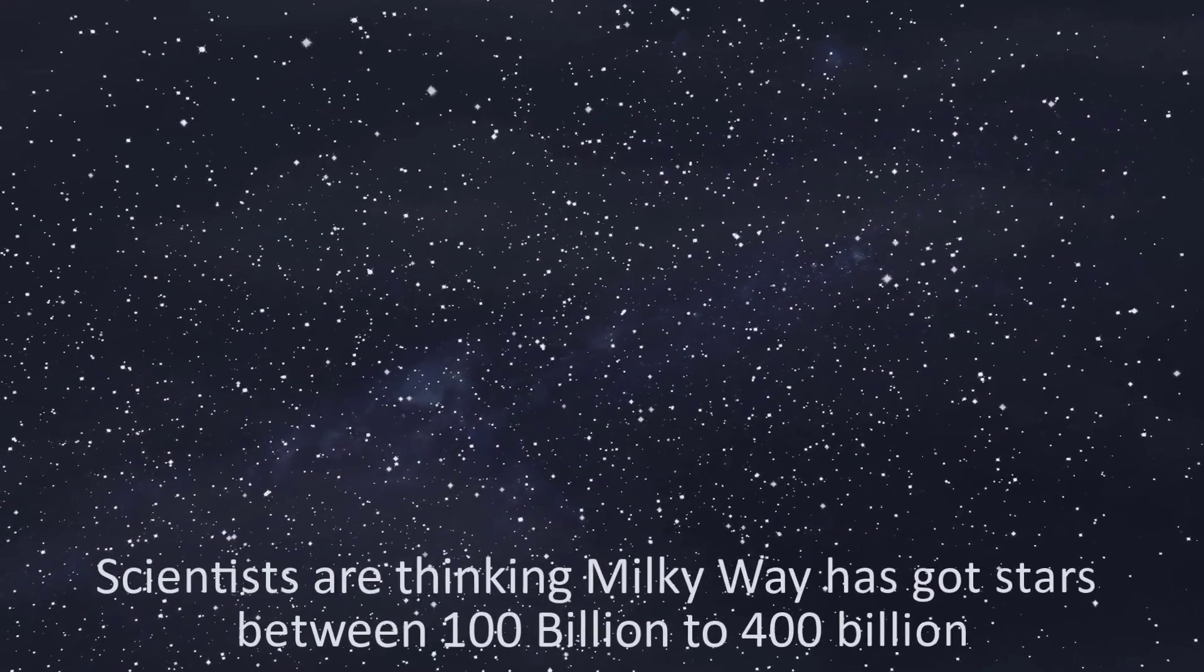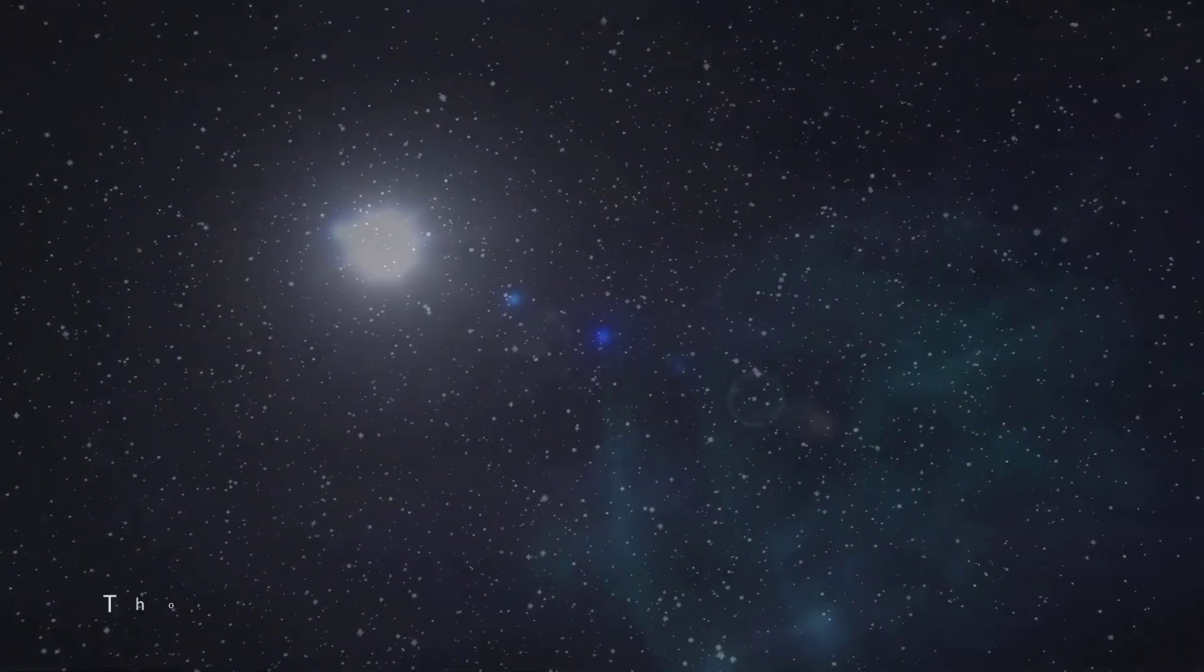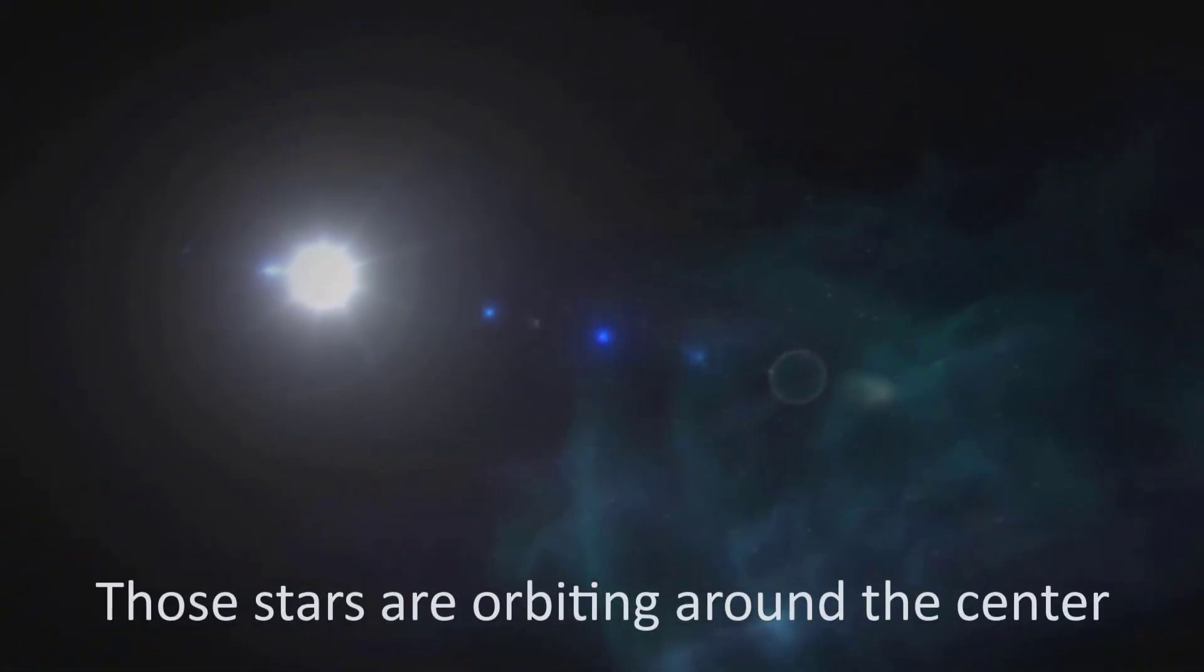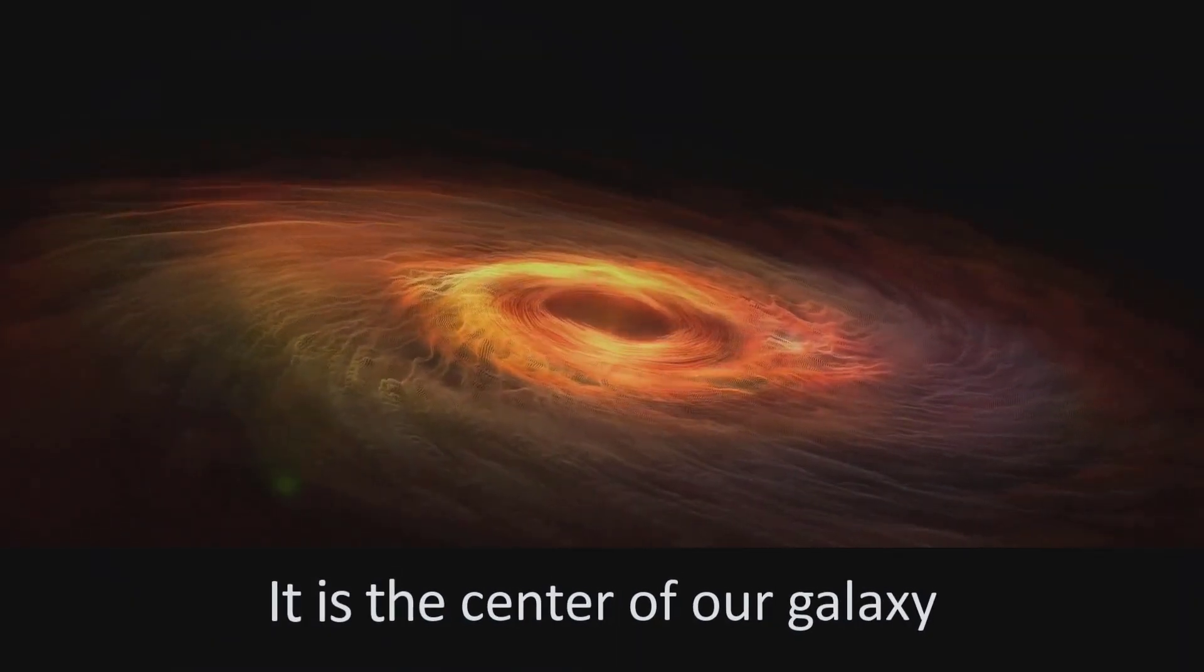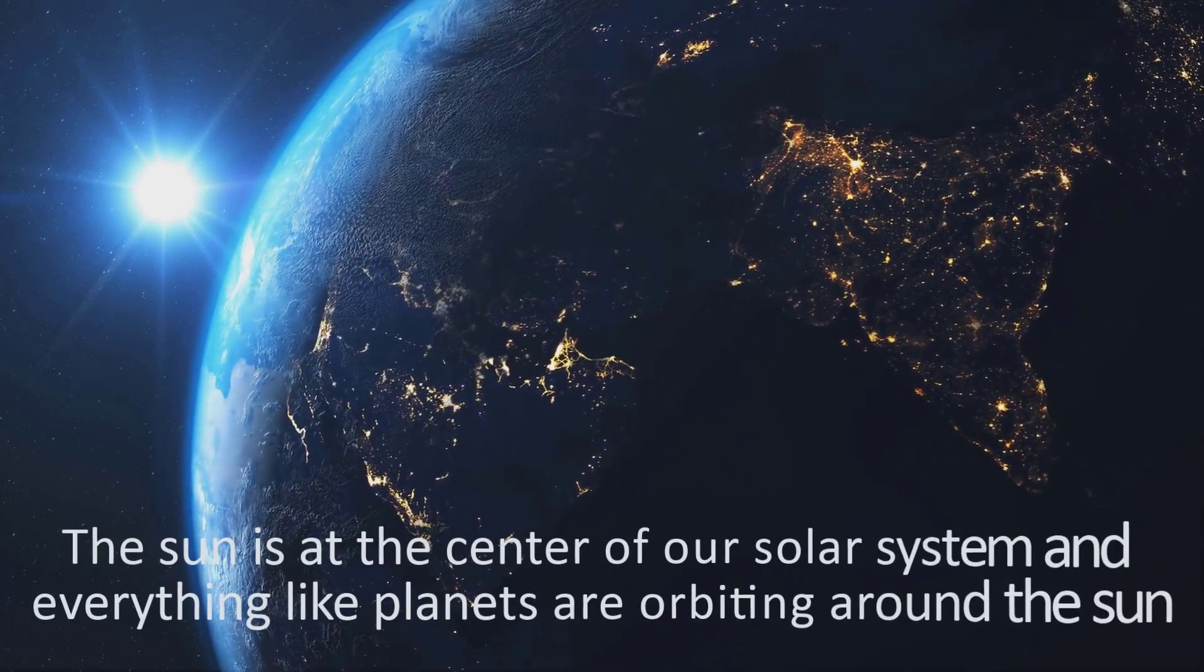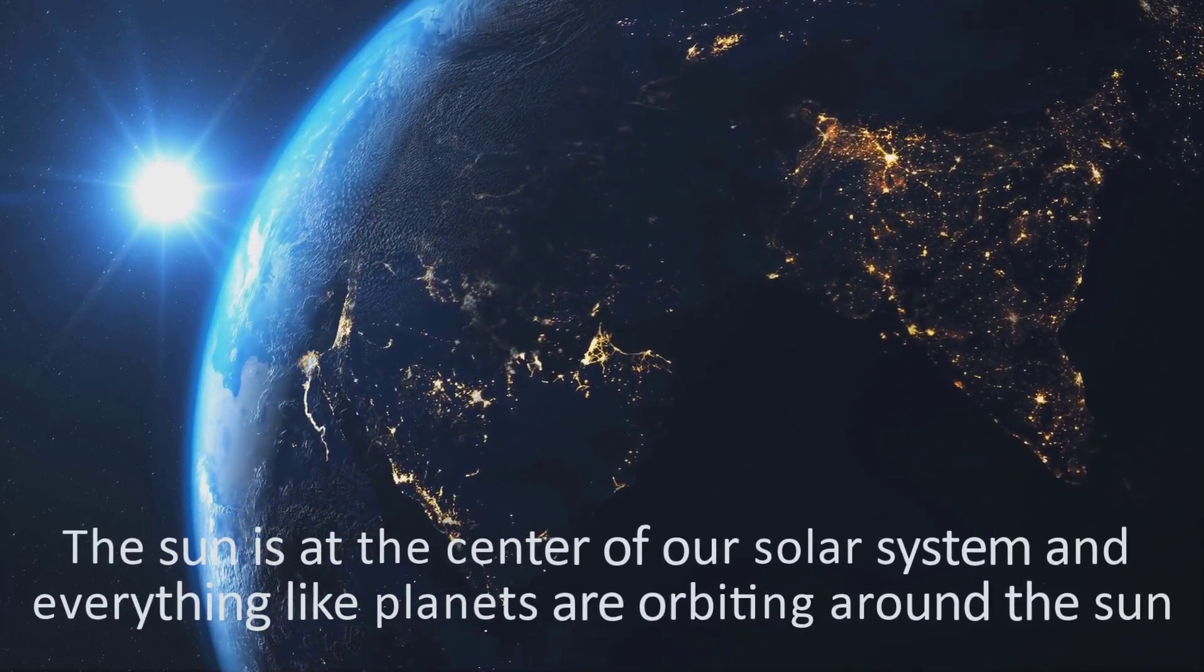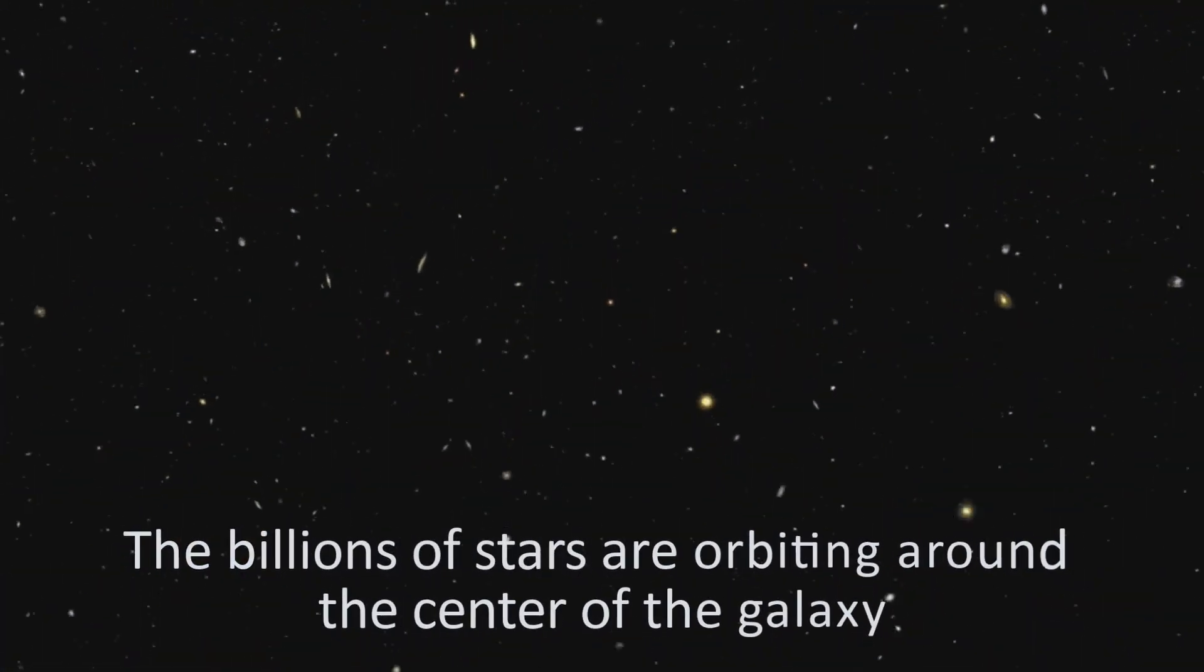Scientists are thinking the Milky Way has between 100 billion to 400 billion stars. Those stars are orbiting around the center, which is the center of our galaxy. Like the center of our solar system, the Sun is at the center of our solar system and everything like planets are orbiting around the Sun.